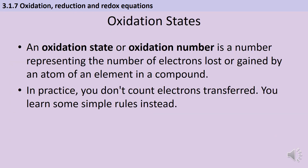Sometimes it's really straightforward to see where electrons have moved in a chemical reaction, but sometimes it's not — particularly if the elements are locked up in compounds. It can be useful to have a number that represents the number of electrons that have been lost or gained by an atom of an element inside a compound, and we call that number an oxidation state or an oxidation number. In practice you don't actually count the electrons that are moving because there are a set of rules, and if you learn the rules it's much faster to just use them.